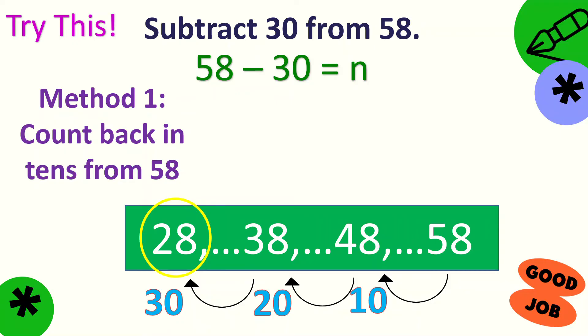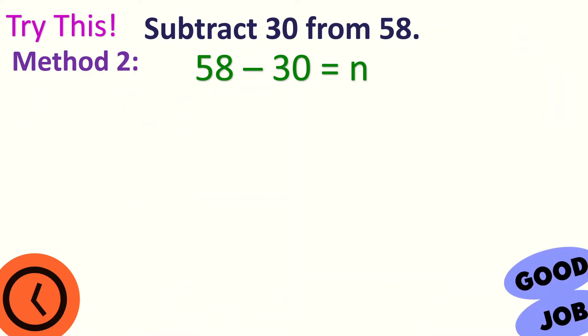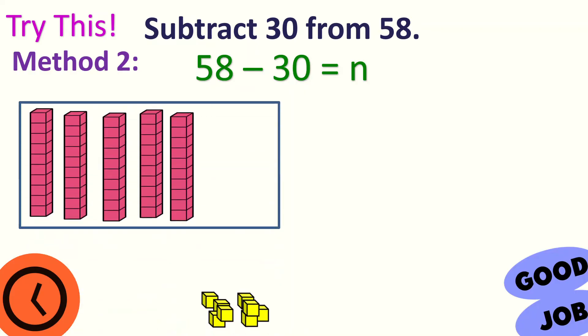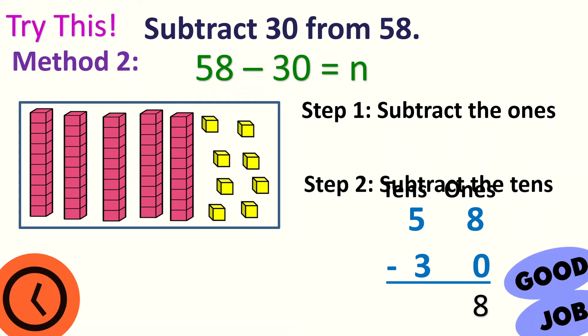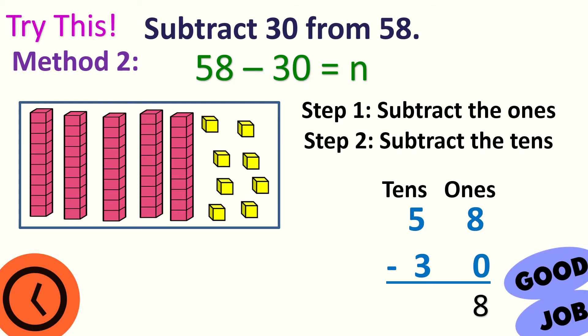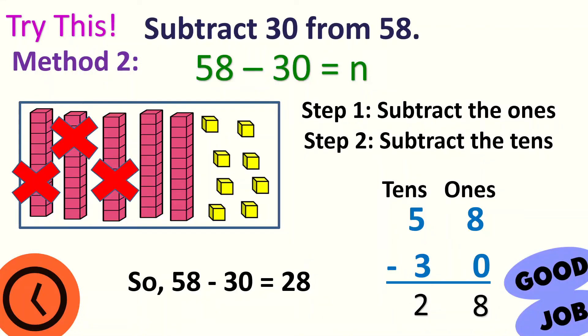Now let's apply the second method. Let's represent 58 using the base 10 blocks — 5 tens and 8 ones. Write it in vertical form. Subtract the ones: 8 minus 0 is 8. Then subtract the tens — take away 3 from 5: 1, 2, 3. How many are left? 2. So, 58 minus 30 is equal to 28.